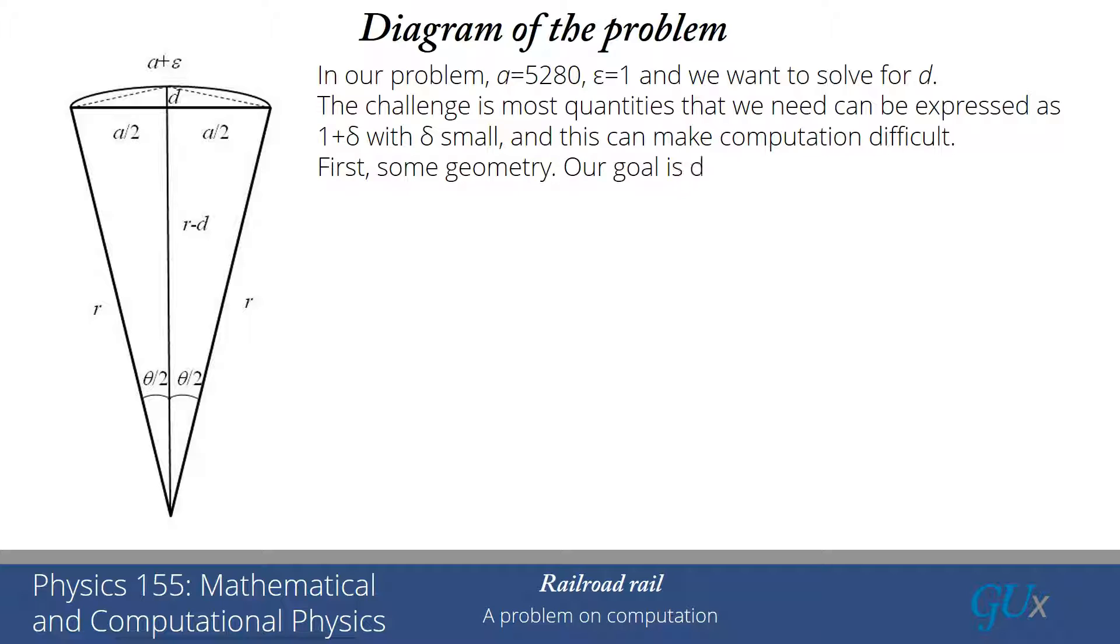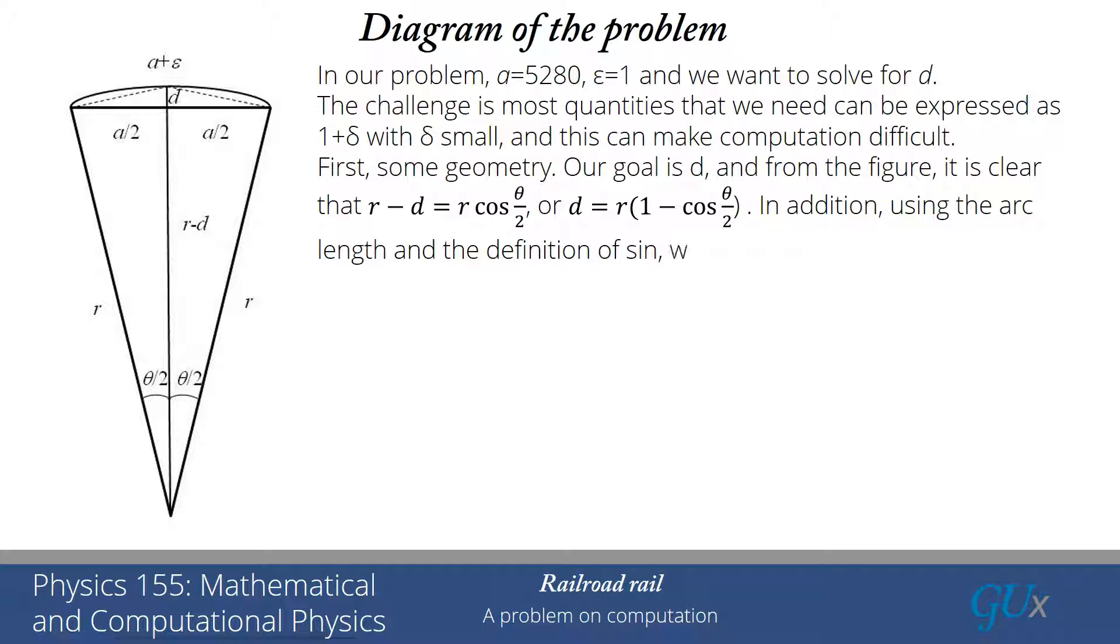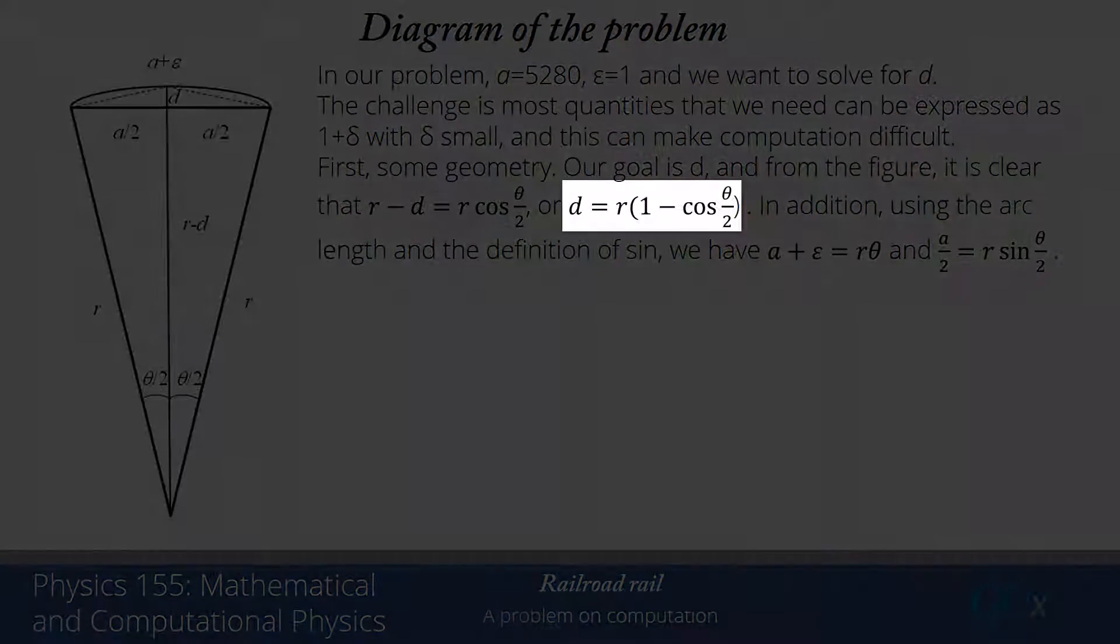Let's work through our geometry. Our goal is to determine D. From the figure, it's clear that the leg of the right triangle, R minus D, the right triangle has legs R, R minus D, and A over 2. I can write that distance R minus D equals R cosine theta over 2. And then I solve for D. D equals R times 1 minus cosine theta over 2.